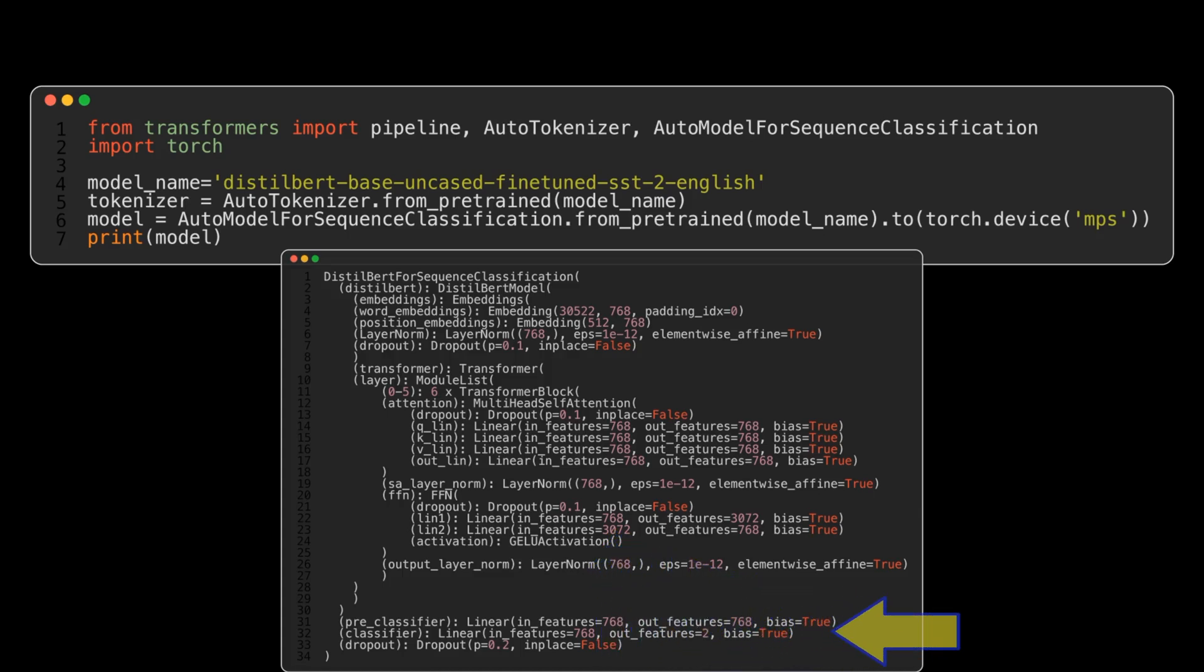Right at the end, you'll see a classification head. The final classifier layer has two features, one neuron that fires for negative and one neuron that fires for positive reviews.